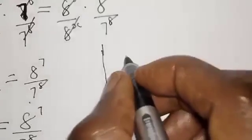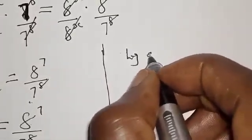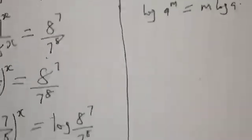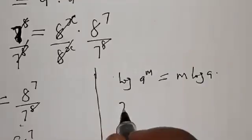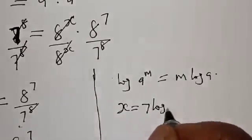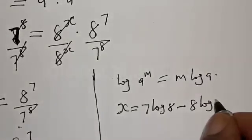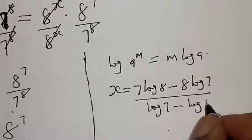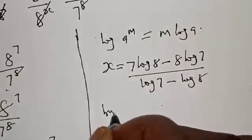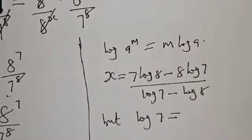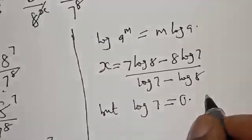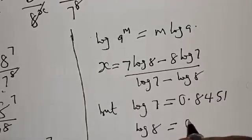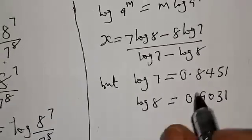We should also recall that if you have log A to the power M, it is the same thing as M log A. Therefore, from this equation, we have x is equal to 7 log 8 minus 8 log 7, over log 7 minus log 8. Now, log 7 is equal to 0.8451 while log 8 is equal to 0.9031. Therefore, we substitute into this equation.